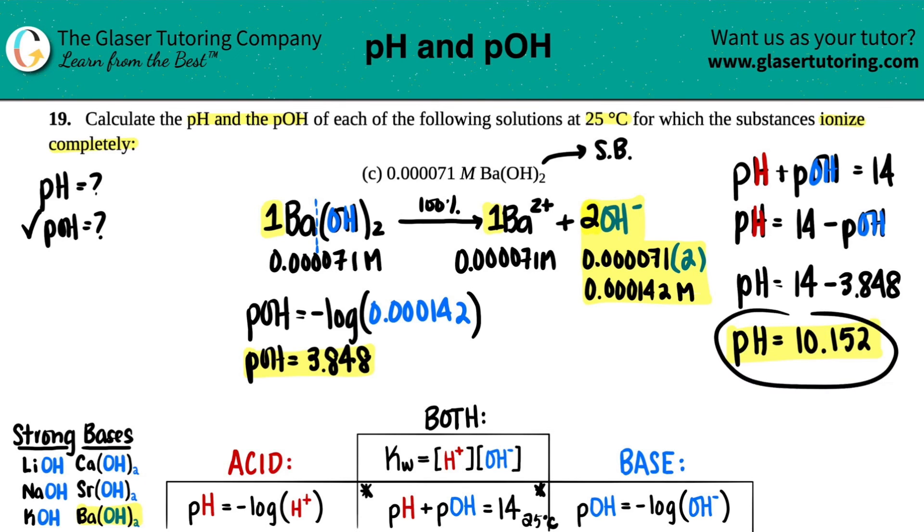As you can see, it's pretty high on the pH scale. That means basic. And it's pretty low on the pOH scale, which also indicates basic. But that's it guys. We're done.